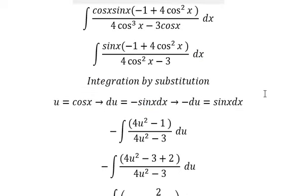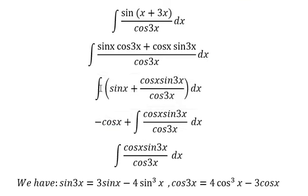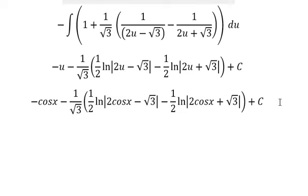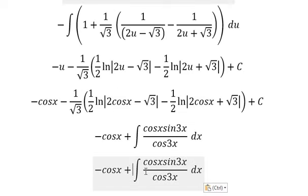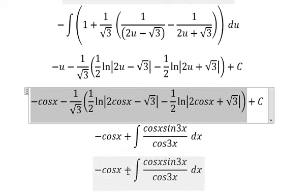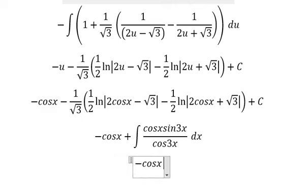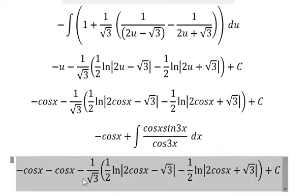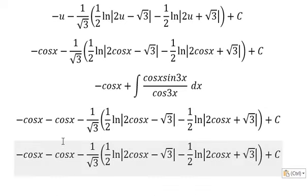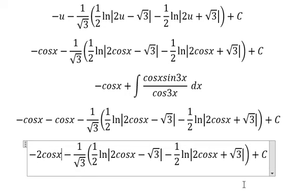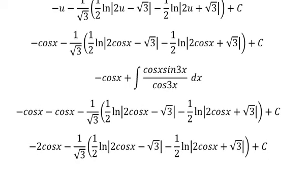And I will put about C, where u is about cosine x. Now we need to go back in here. The integration of this one is this one. So this one we have negative number two cosine x. This is the end. Thank you for watching.